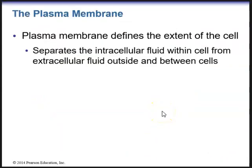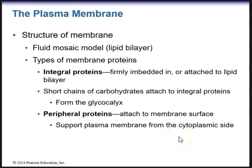The plasma membrane defines the extent of the cell. It separates the intracellular fluid within the cell from the extracellular fluid outside and between the cells. The structure of the plasma membrane is based on a fluid mosaic model, meaning it has a lipid bilayer. Within the lipid bilayer we can see types of membrane proteins throughout. We have integral proteins that are firmly embedded in the plasma membrane. We also have short chains of carbohydrates attached to the integral proteins that form the glycocalyx, and peripheral proteins that attach to the membrane surface and support it from the cytoplasmic side.